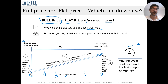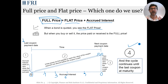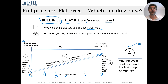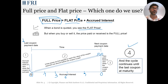The second the coupon is paid, accrued interest falls sharply back to zero and the cycle repeats. If we quoted the full price, investors would see the bond price rising over time due to accrued interest building up, then suddenly collapsing — and they couldn't tell whether price changes reflect accrued interest, changes in creditworthiness, or falling yields. That's why we quote the flat price: it is not impacted by the accrued interest cycle.